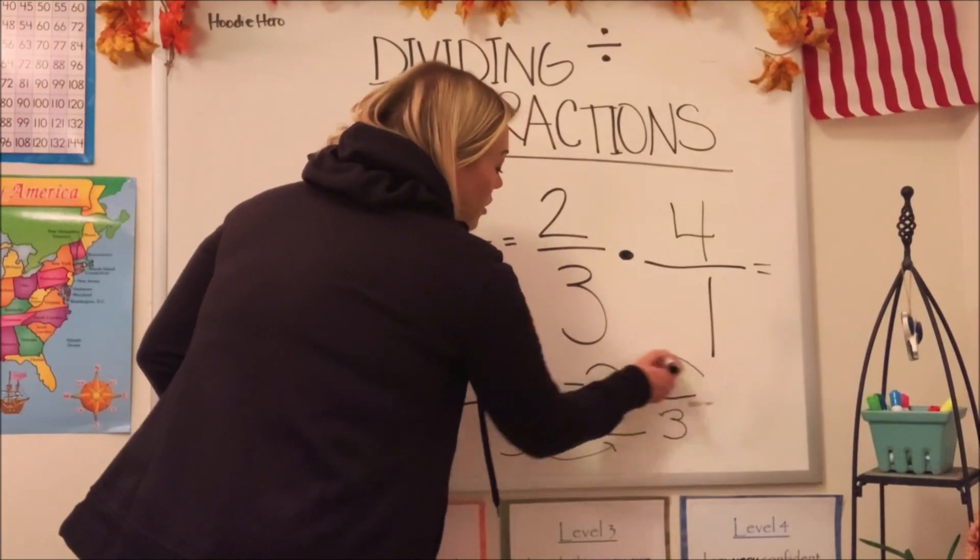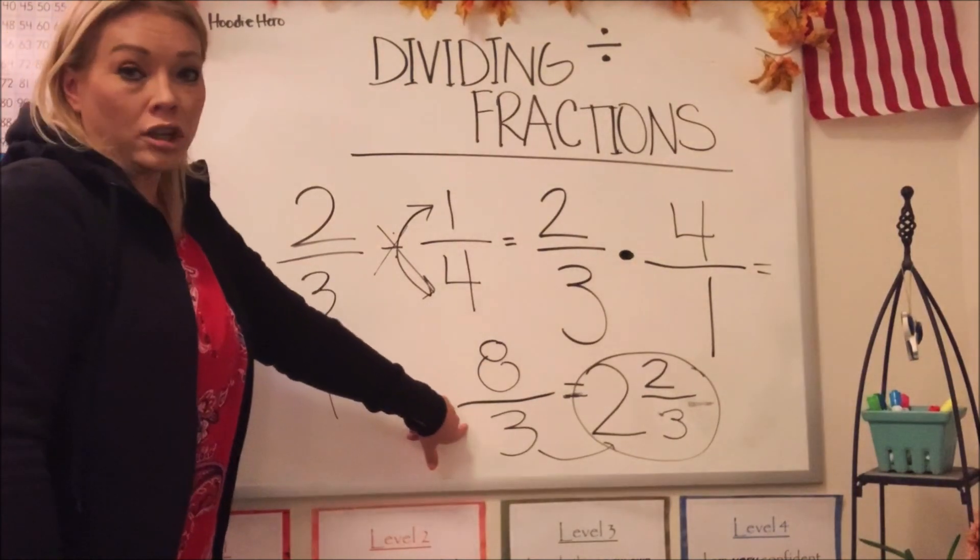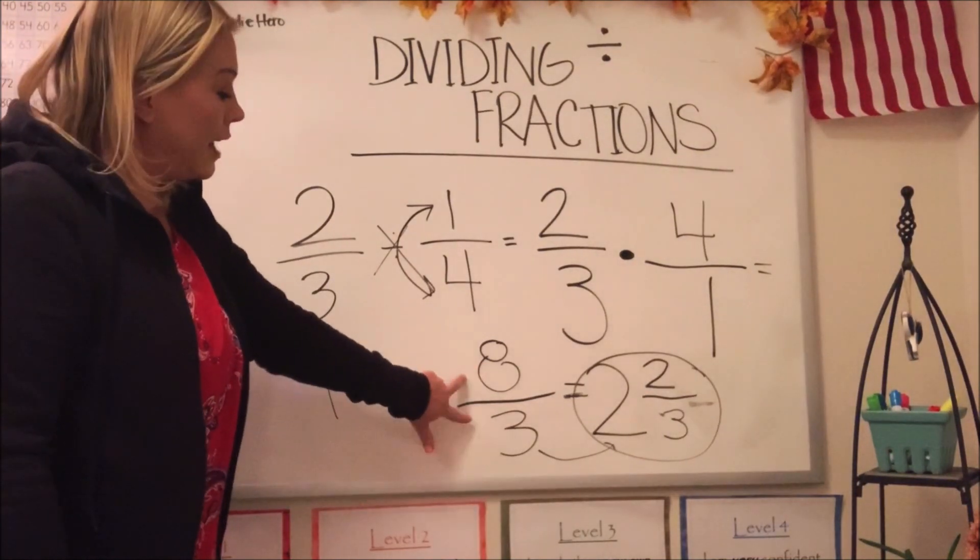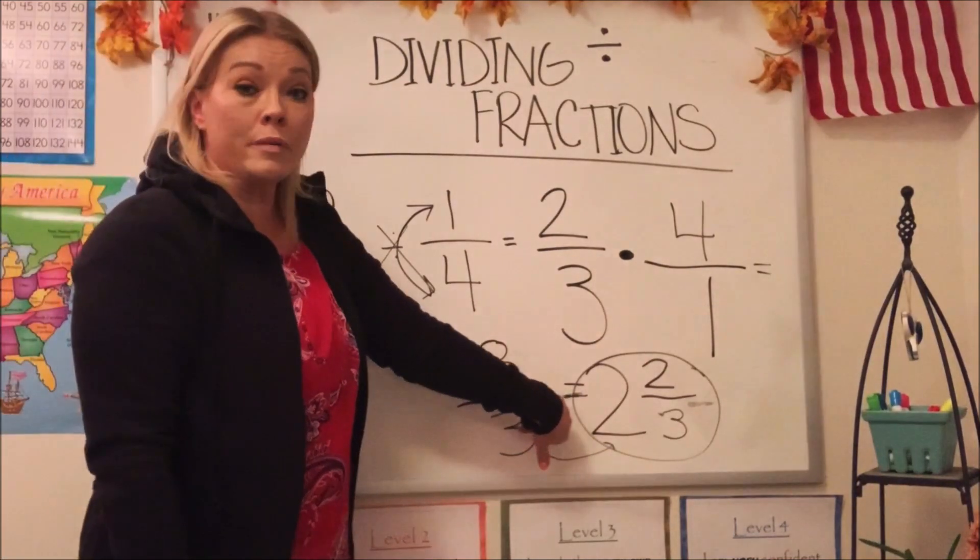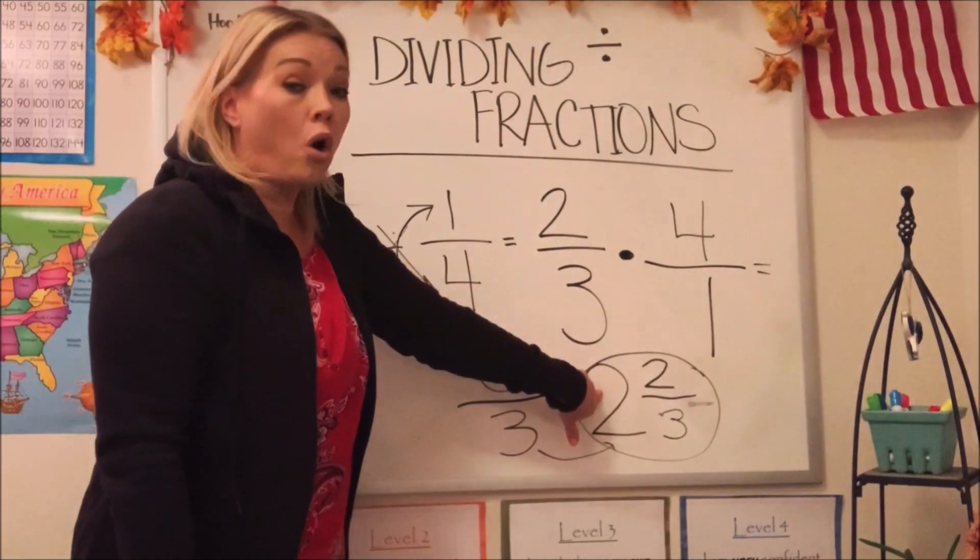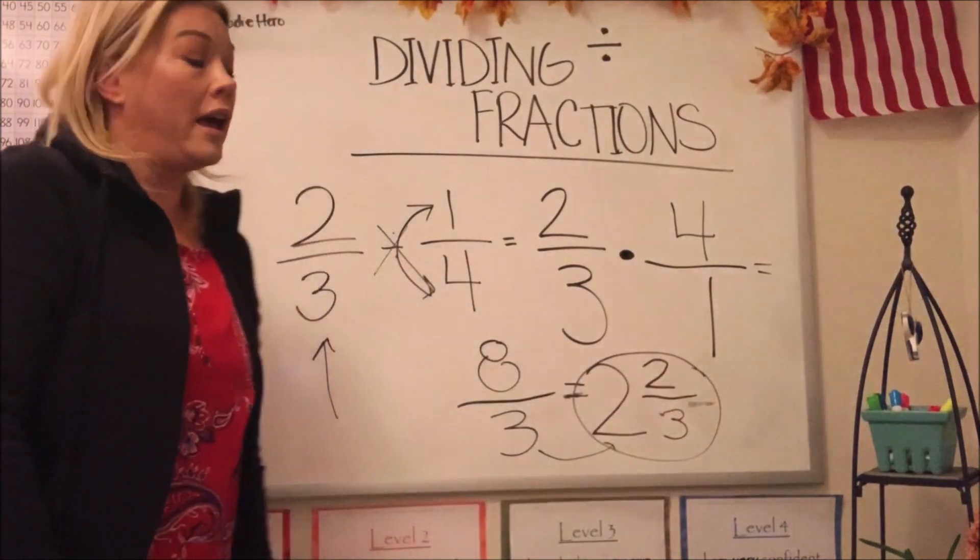Okay, so that is our answer. If you put eight-thirds as your answer, that would be incorrect because that is an improper fraction. You have to go ahead and turn it into a mixed number, which is two whole and two-thirds. Okay, two and two-thirds.